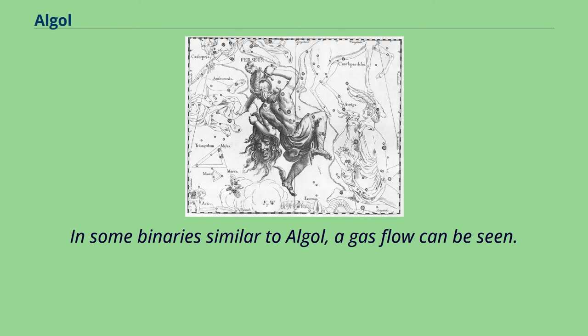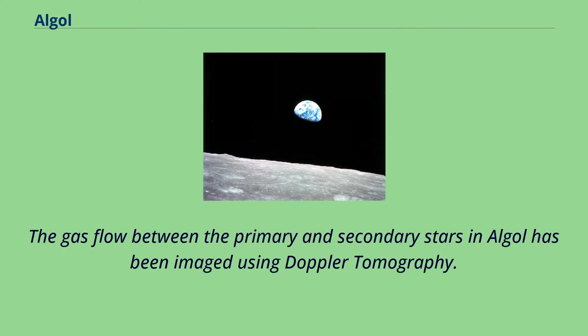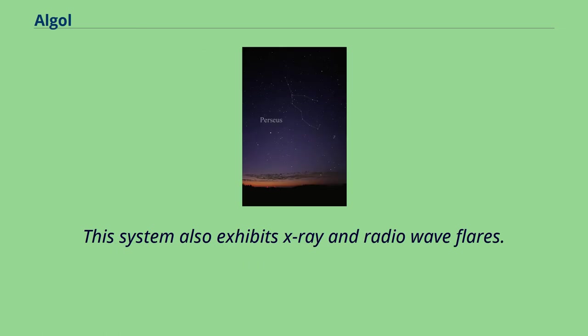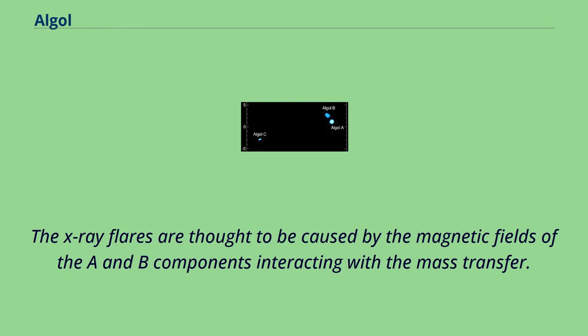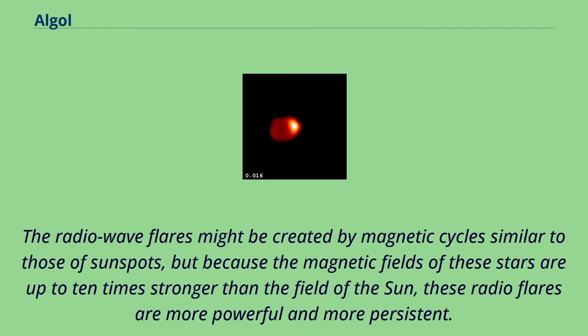In some binaries similar to Algol, a gas flow can be seen. The gas flow between the primary and secondary stars in Algol has been imaged using Doppler tomography. This system also exhibits X-ray and radio wave flares. The X-ray flares are thought to be caused by the magnetic fields of the A and B components interacting with the mass transfer. The radio wave flares might be created by magnetic cycles similar to those of sunspots, but because the magnetic fields of these stars are up to 10 times stronger than the field of the Sun, these radio flares are more powerful and more persistent.